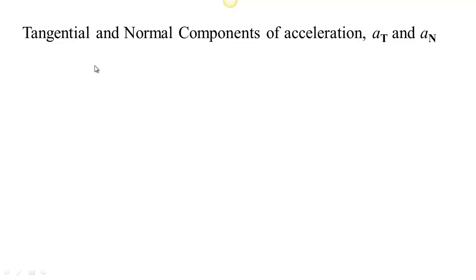We want to consider the acceleration for a minute. It turns out the acceleration can be broken out into a part that is tangent to the curve, a part that is normal to the curve — in fact, the part that is in the direction that you're turning. Here's how to see that.